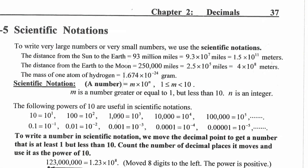Scientific notation is used to write very large numbers or very small numbers. For example, 93 million miles equals 9.3 times 10 to the 7th miles, which equals 1.5 times 10 to the 11th meters. 250,000 miles equals 2.5 times 10 to the 5th miles, which equals 4 times 10 to the 8th meters. Or you can have 1.674 times 10 to the negative 24th gram.